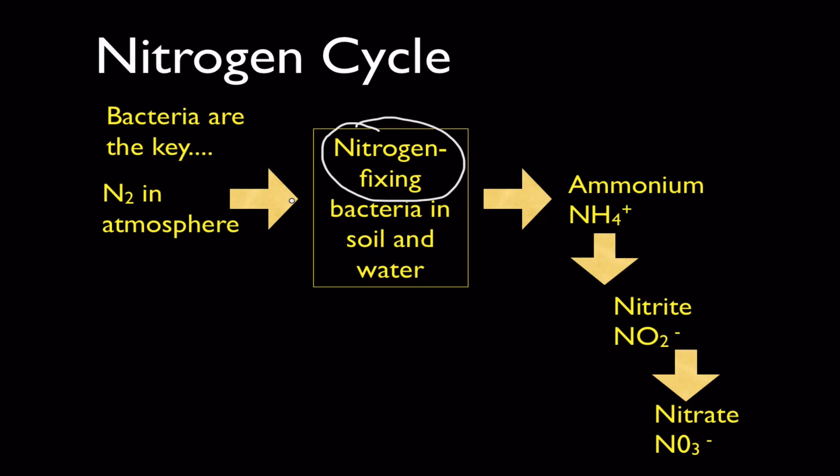The forms that N2 gets converted to is ammonium and ammonia, NH3 or NH4 type molecules. And other bacteria can then convert the ammonia into nitrites, which are NO2s, and finally to nitrates. And nitrates are plant fertilizers. Plants can use them, can now access this nitrogen and use it to build the molecules they need to grow and reproduce.